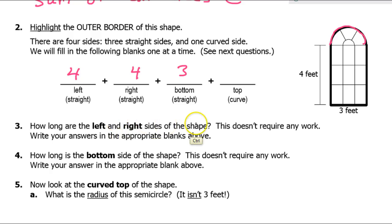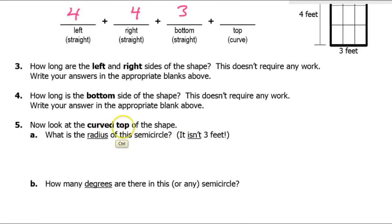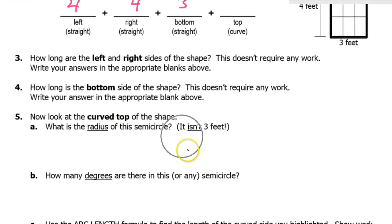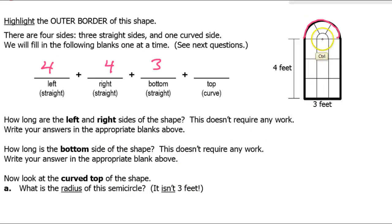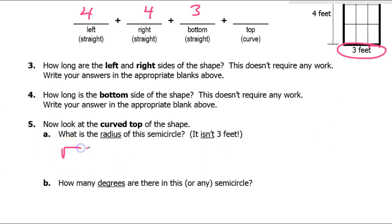How long are the left and right sides? That doesn't take any work. How long is the bottom? Obvious. Now look at the curved top of the shape. What is the radius of this semicircle? One point five. The diameter is three. Looking at the bottom, the diameter is three. So the radius is one point five.